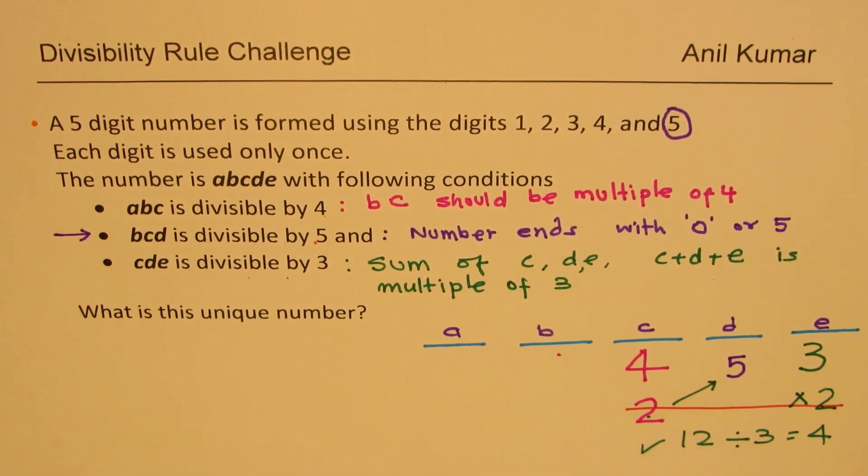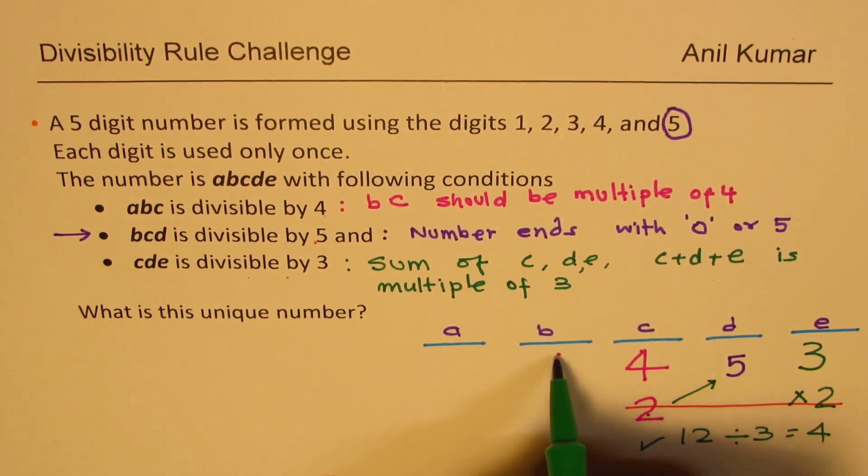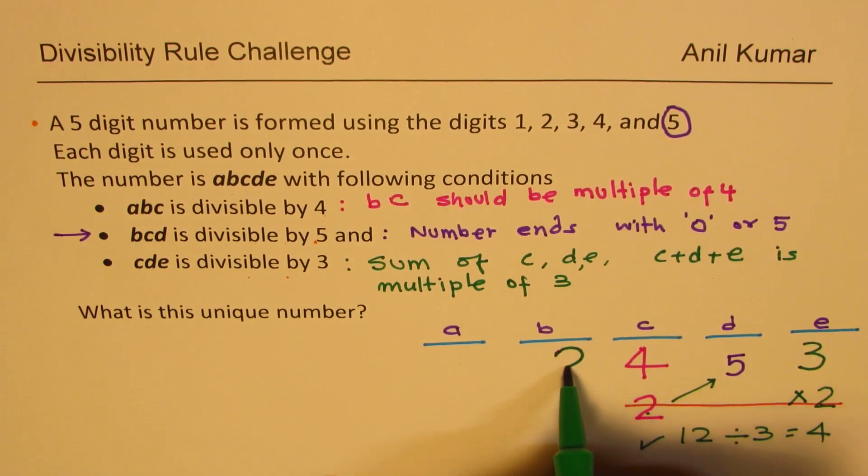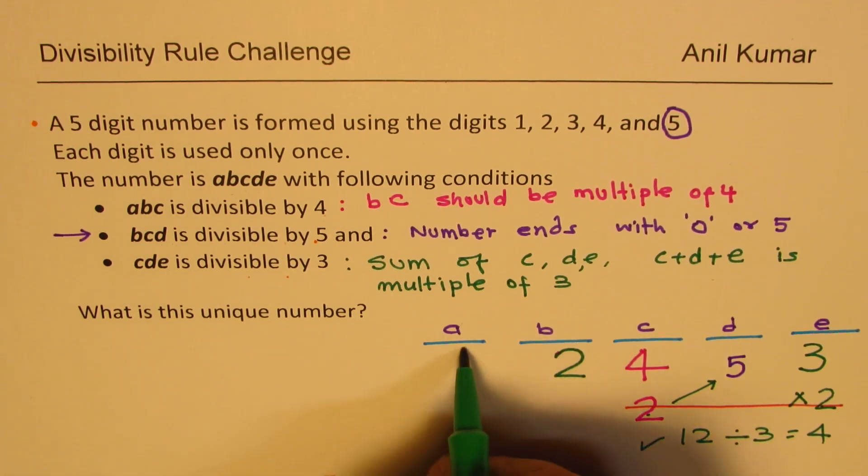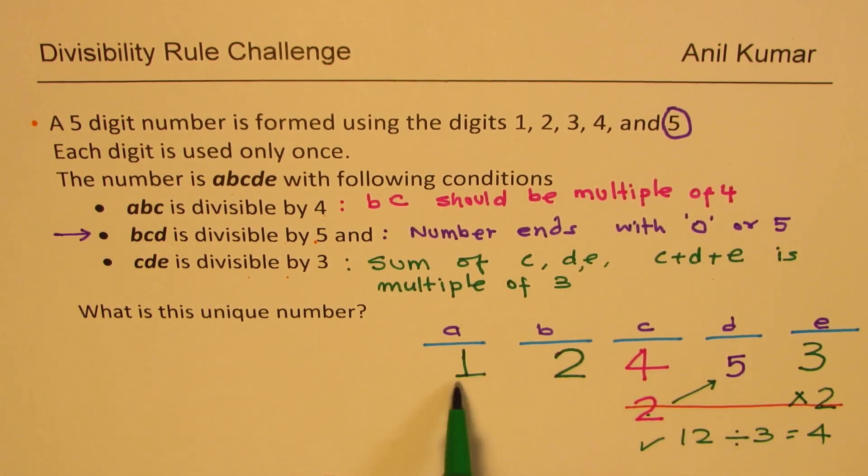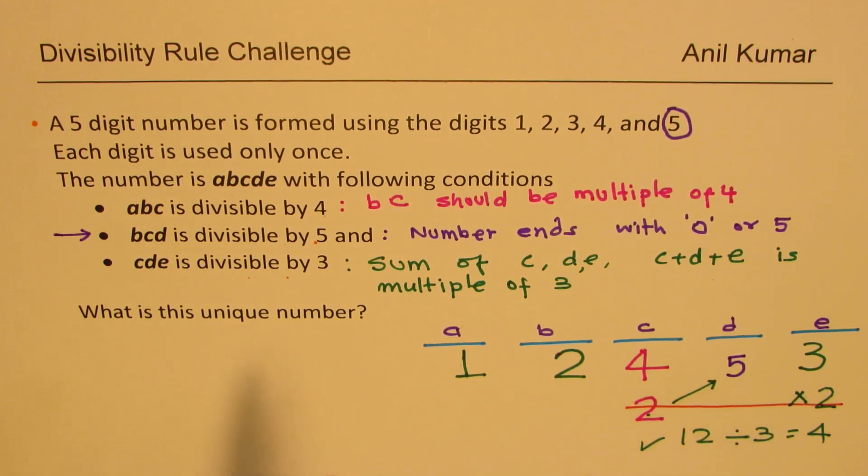Now, since these two numbers should be multiple of 4, we have already placed 4 here. That number could only be 2. So it's 24 for us. What is left? The number 1 is left. So the answer is 1, 2, 4, 5, 3. This is the number which satisfies all the conditions.